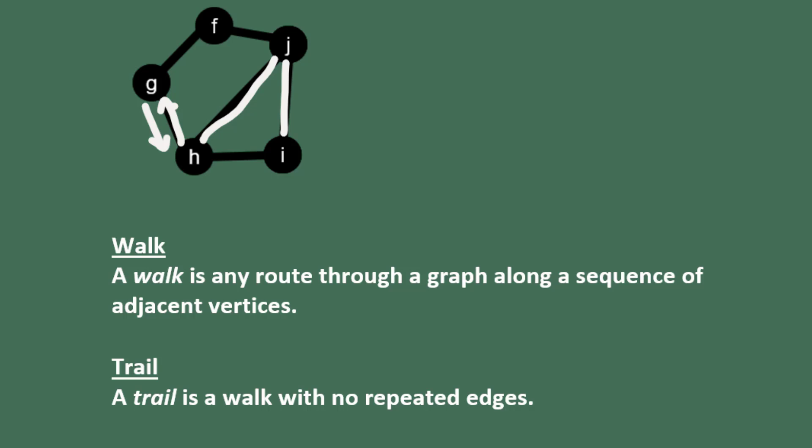A walk can cover any or all of the edges any number of times. The only rule you can't break with a walk is you can't go off the graph. For example, I can't go from I to J, J to H, and then over to F.